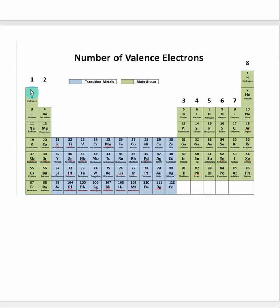Anything in group 1 has one valence electron, group 2 has two valence electrons, and it continues on 3, 4, 5, 6, 7. Technically noble gases would have 8.